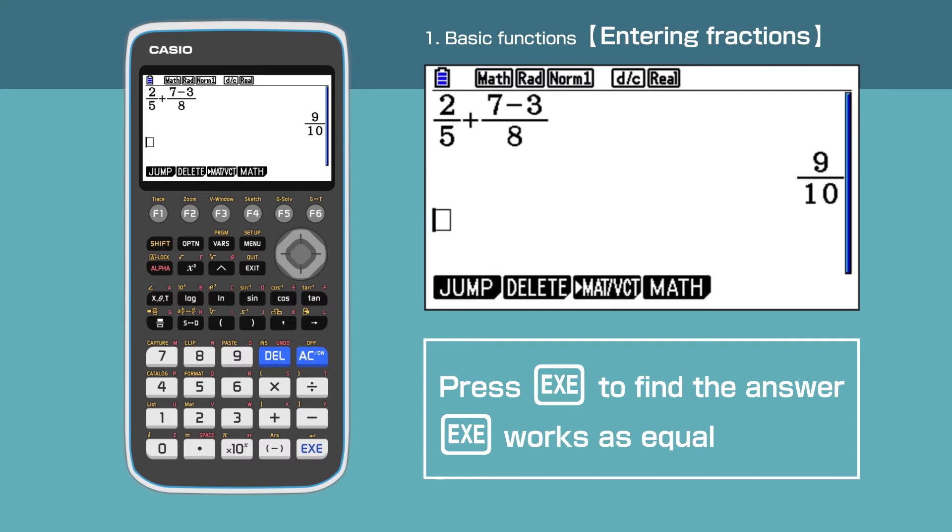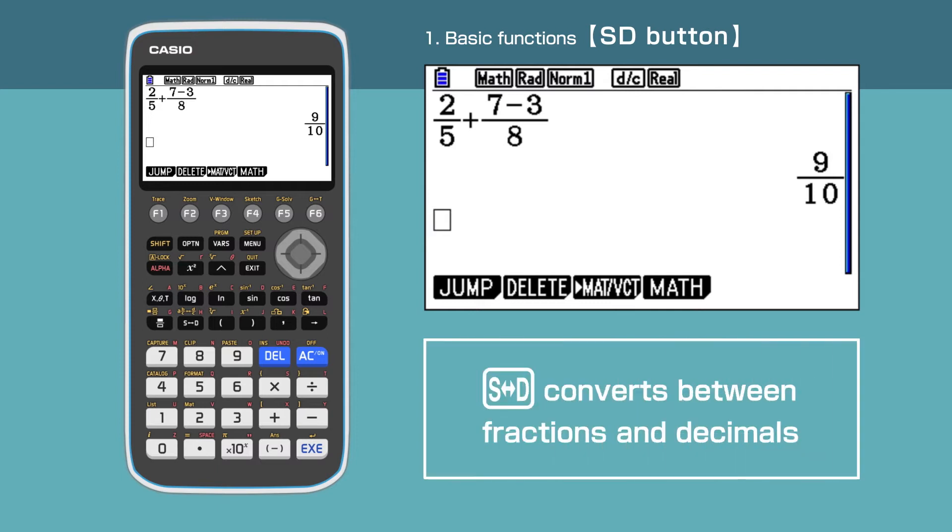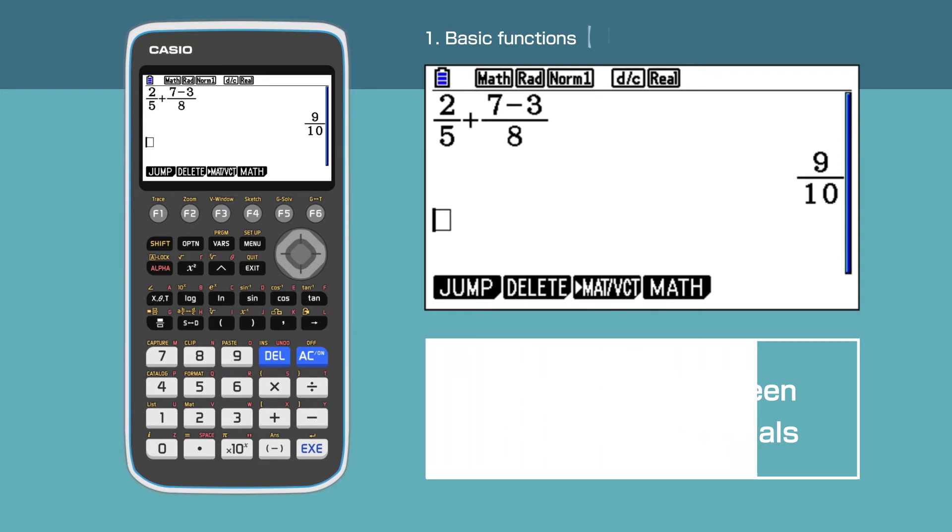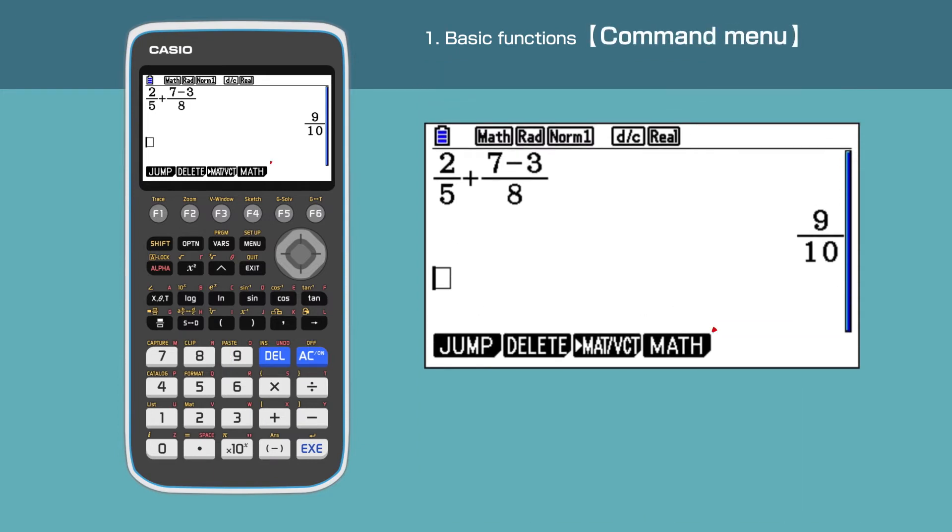If you want the answer in decimal form, press the SD button. Now the answer is given in decimal. Press the SD button again to convert the answer back to fraction.